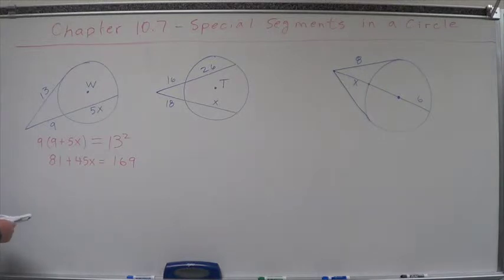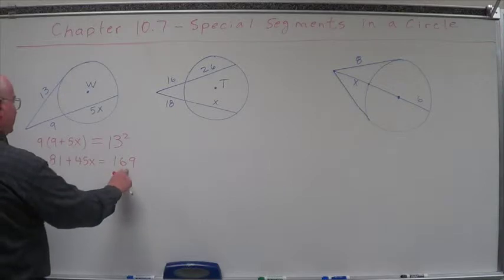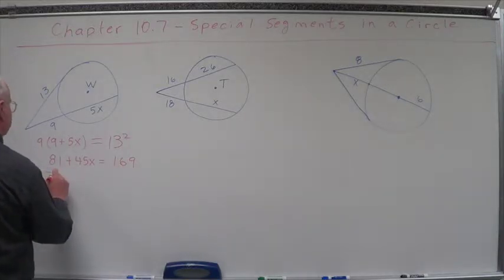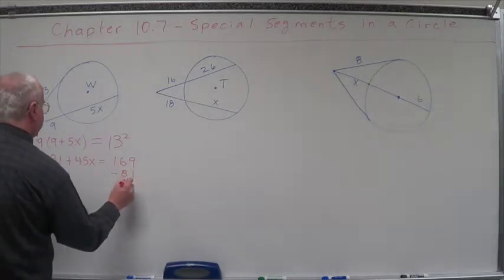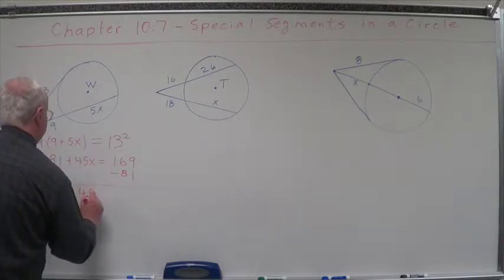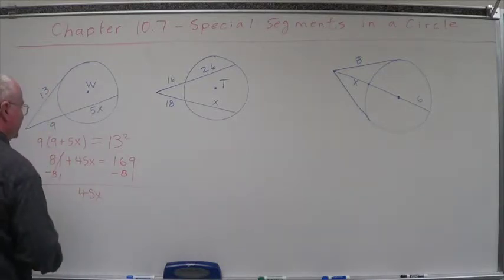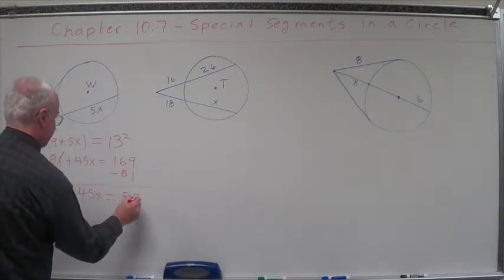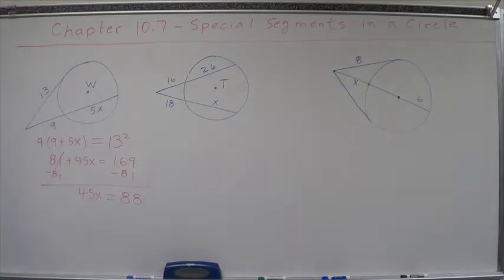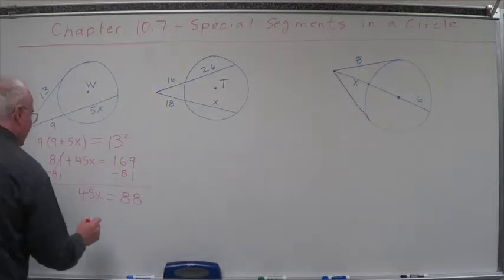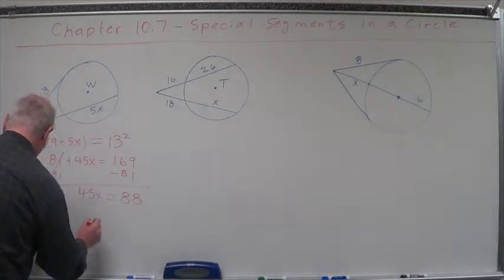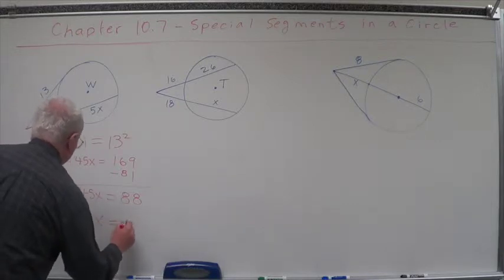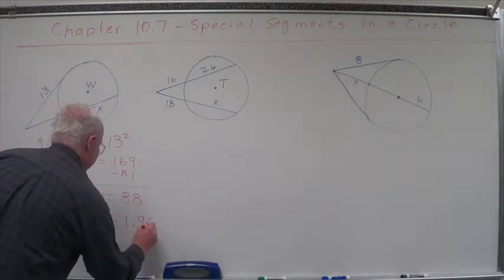So when we do that, let's subtract this from both sides, minus 81, come across. We have 45x, that goes to 0 equals 88. I think that's correct, isn't it? And if you do that, I think you'll find that x equals 1.96.